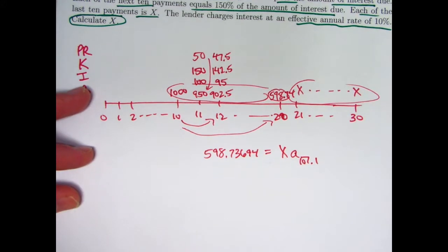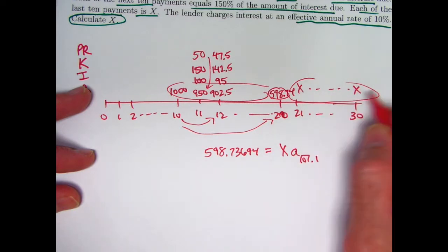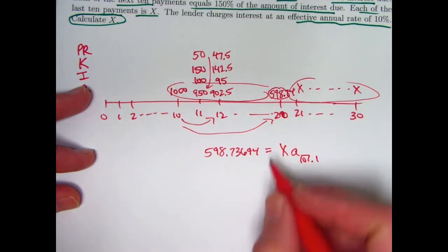10 payments, interest rate of 0.1. That's going to be that product. That'll be the present value of this income stream at time 20, and it has to equal the balance there.